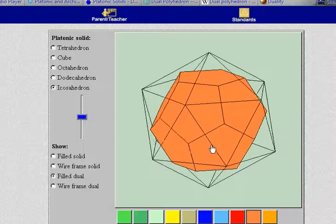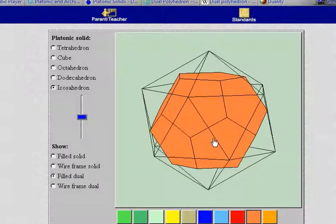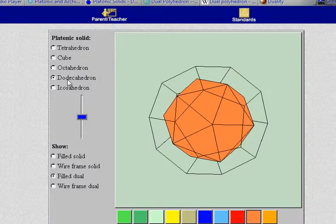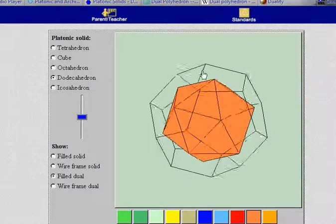The dual of the icosahedron is the dodecahedron. And as you can imagine if we take the dual of the dodecahedron we should get the icosahedron and in fact we do.